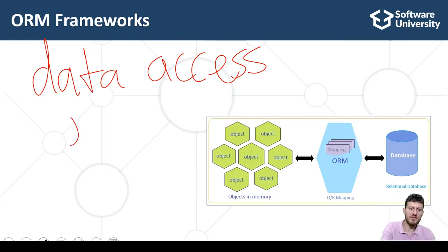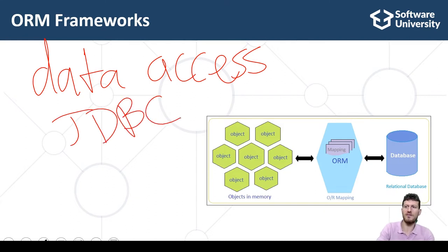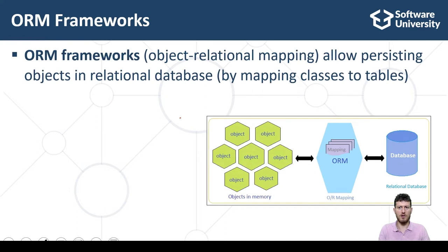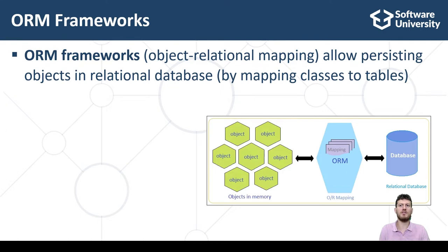For example, the JDBC technology connects Java programs to relational databases such as MySQL and PostgreSQL. ORM frameworks — object relational mapping — allow persisting objects in relational databases. ORM frameworks work by mapping classes to database tables.